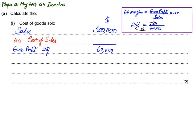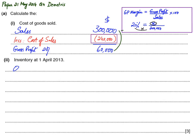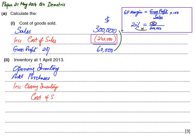If I am selling something for 300,000 and 60,000 of that is my profit, deducting both gives cost of sales easily. This was the first requirement — cost of sales is 240,000. The second requirement is opening inventory. The format for cost of sales is: opening inventory plus purchases less closing inventory equals cost of sales. Purchases are given as 170,000, closing inventory is 50,000, and we have already found cost of sales as 240,000.